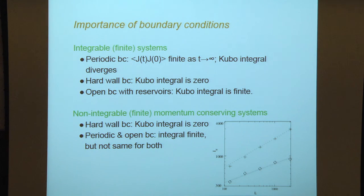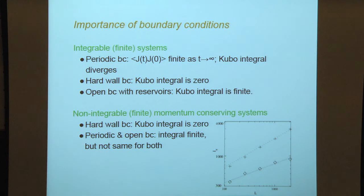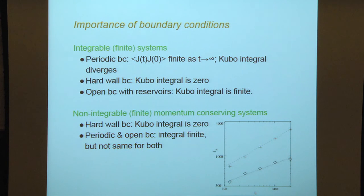Now we look at non-integrable, finite, but momentum-conserving systems. If you take hard wall boundary conditions, the Kubo integral once again is zero for the same reason. If you take periodic and open boundary conditions, in both cases the integral is finite, but it's not the same for both. On a log-log scale, what I've plotted is the Kubo integral from the previous slide. This is what you get with periodic boundary conditions, and this is what you get with open boundary conditions with reservoirs. The message is broader than this particular system: boundary conditions make a difference to the integral even in this case.